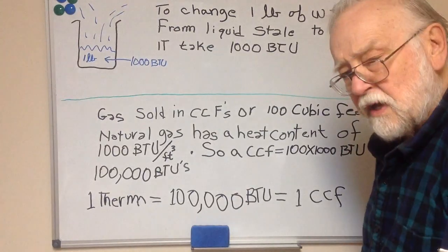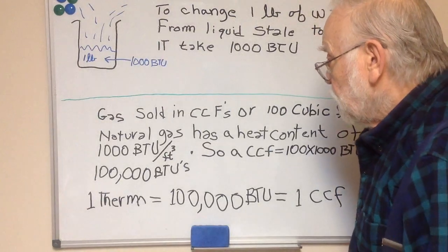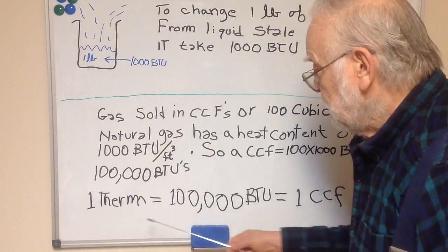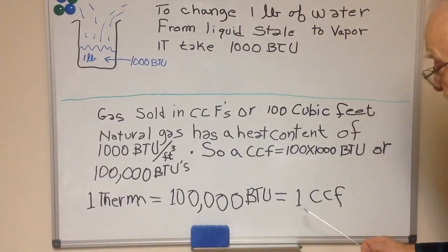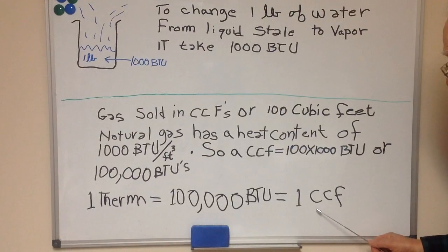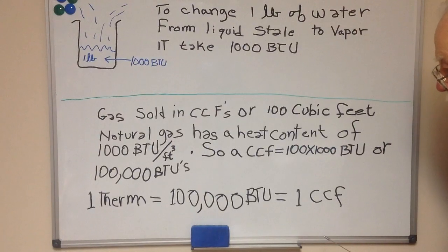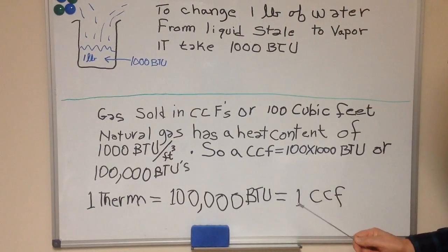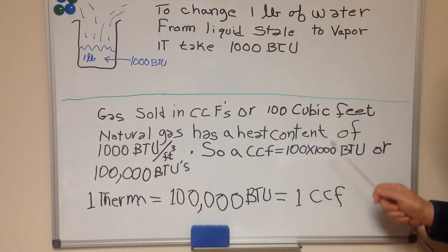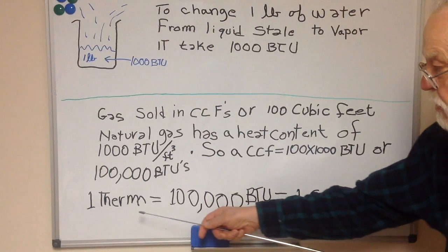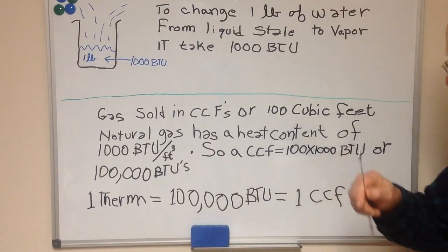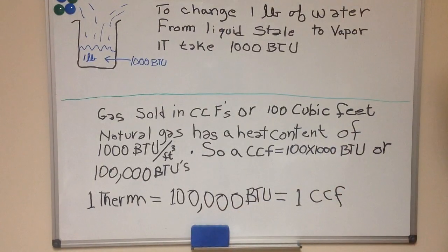A therm is defined as 100,000 BTUs, or one CCF — one unit of a hundred cubic feet. Because there are 1,000 BTUs per cubic foot, multiplying 100 times 1,000 gives 100,000. So one therm equals 100,000 BTUs equals one CCF — it's just an easy name for 100,000 BTUs.